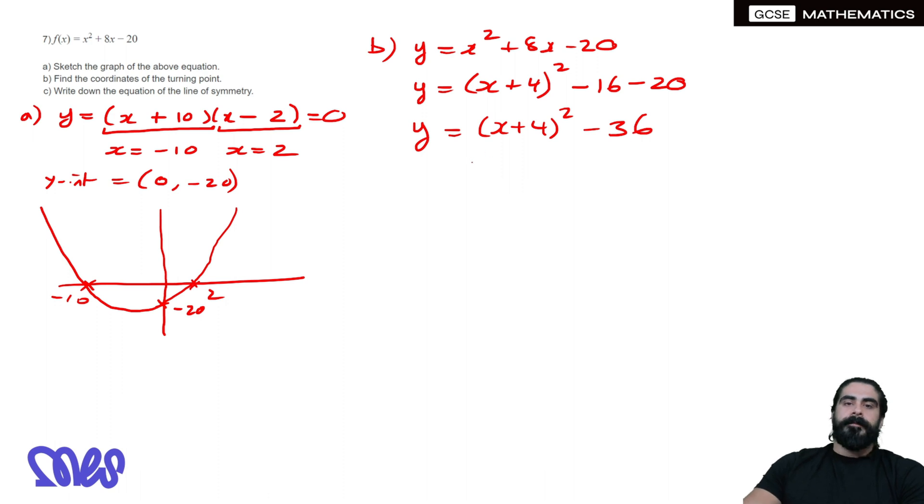The (x + 4)² is going to take your graph and move it to the left by 4, so your turning point will be at -4. You're taking the x² graph, going to the left by 4, then the -36 brings it down, so it'll be at -36.